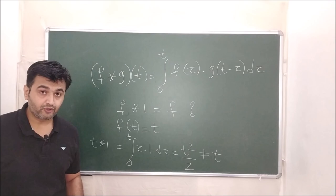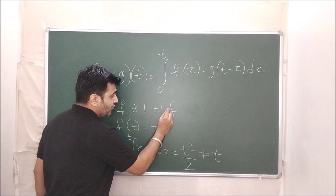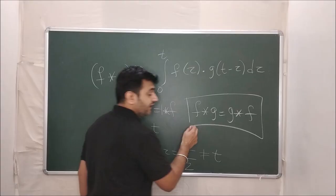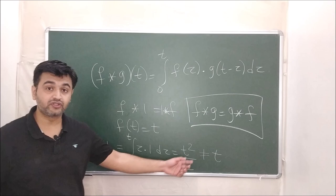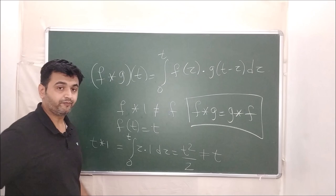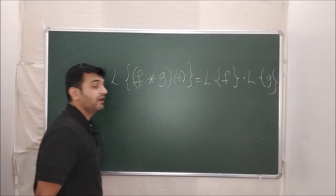However, convolution does satisfy a nice property: f★1 equals 1★f, and in general f★g equals g★f — the convolution product is commutative. Also, f★0 equals 0, because the integrand becomes 0 throughout. So these are key properties of convolution to keep in mind.